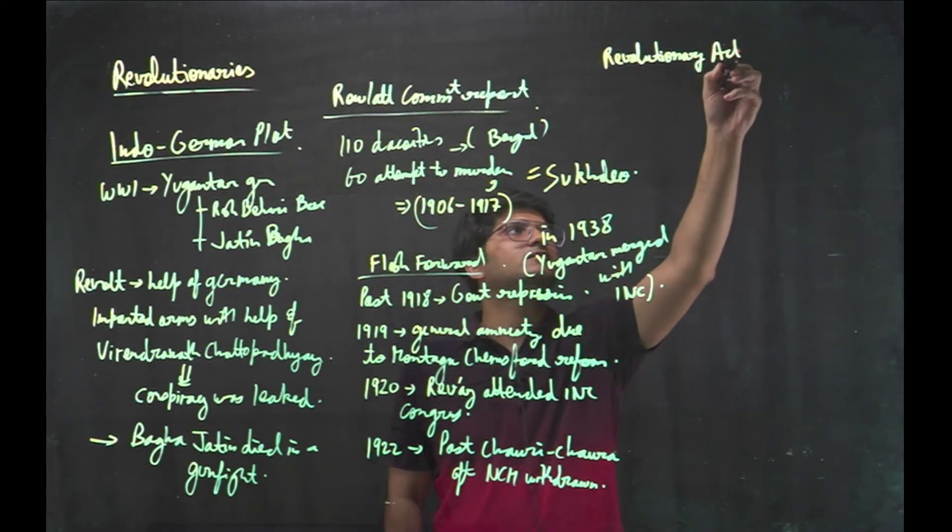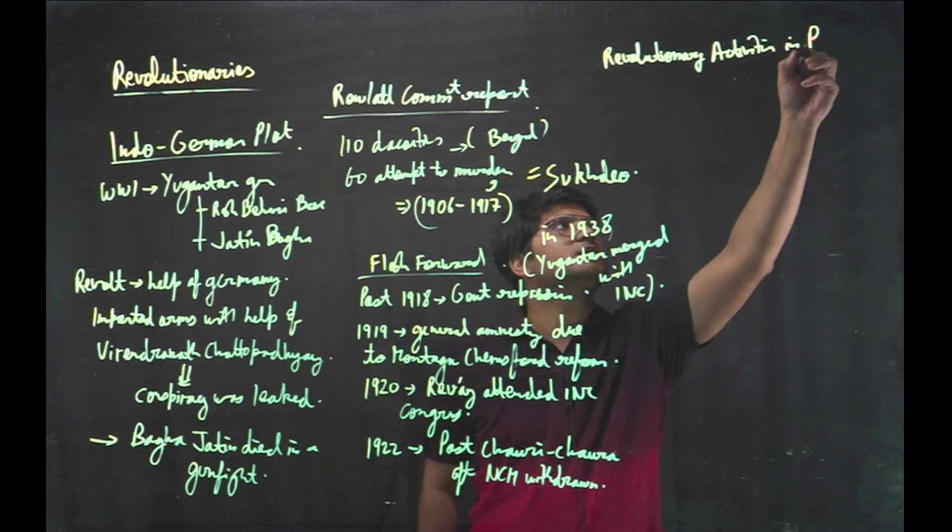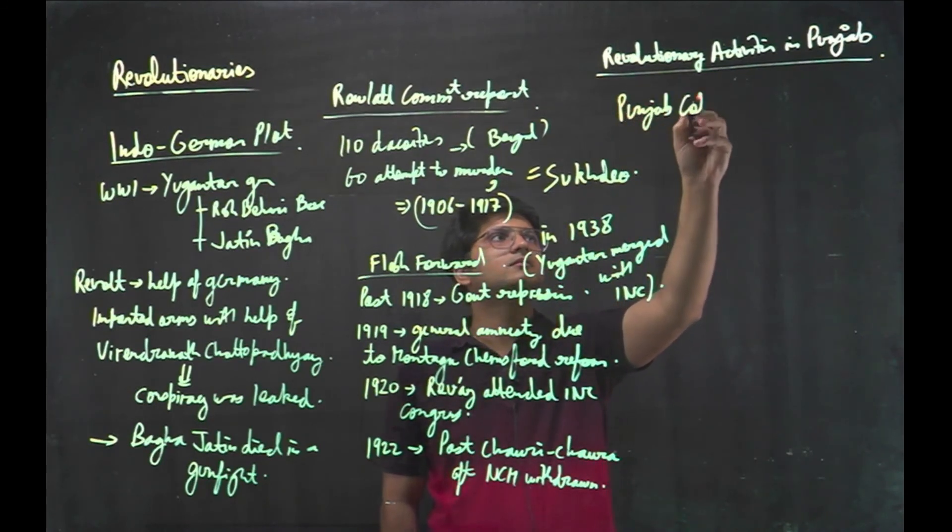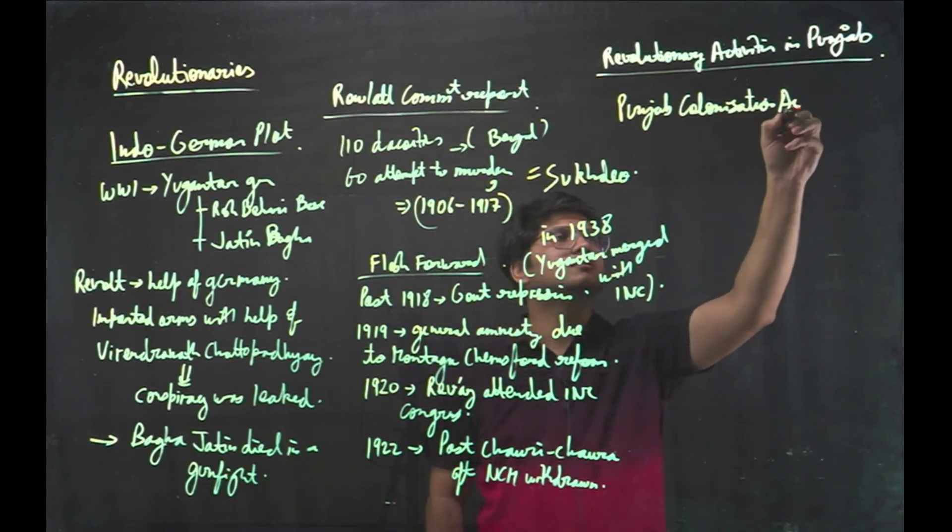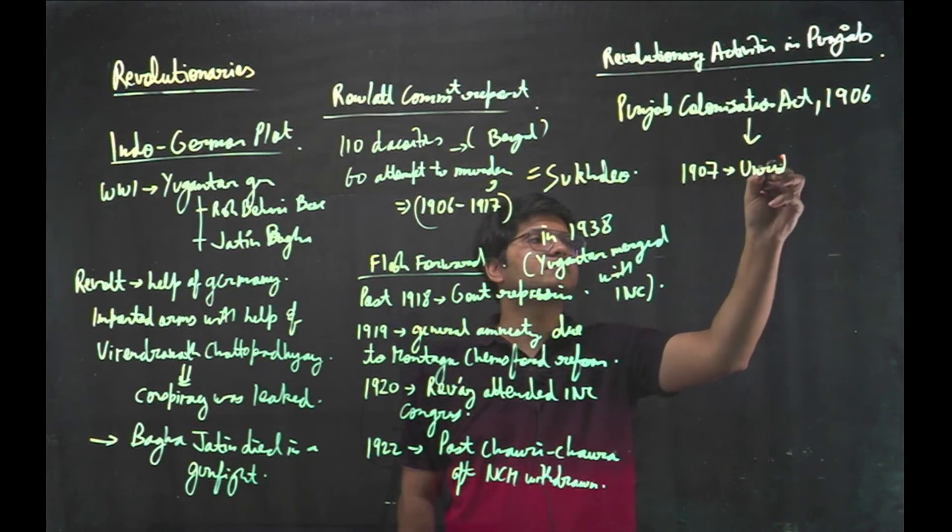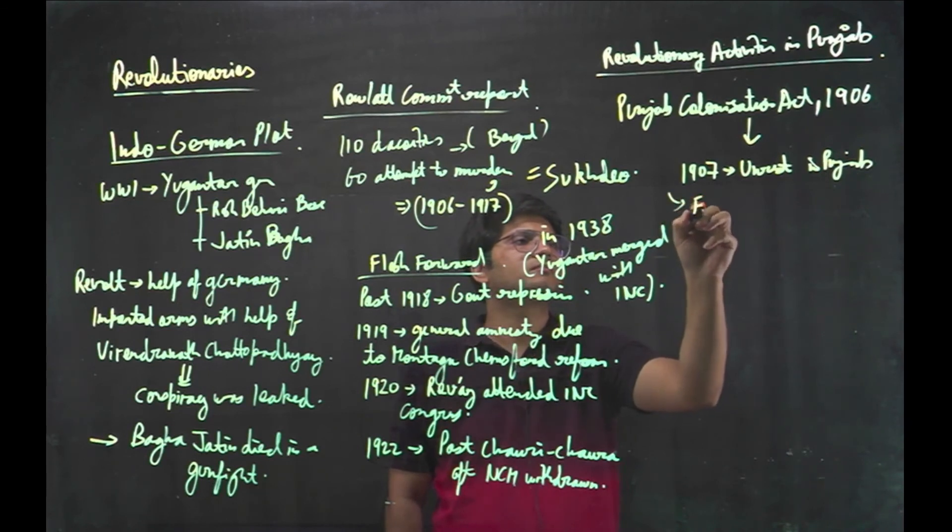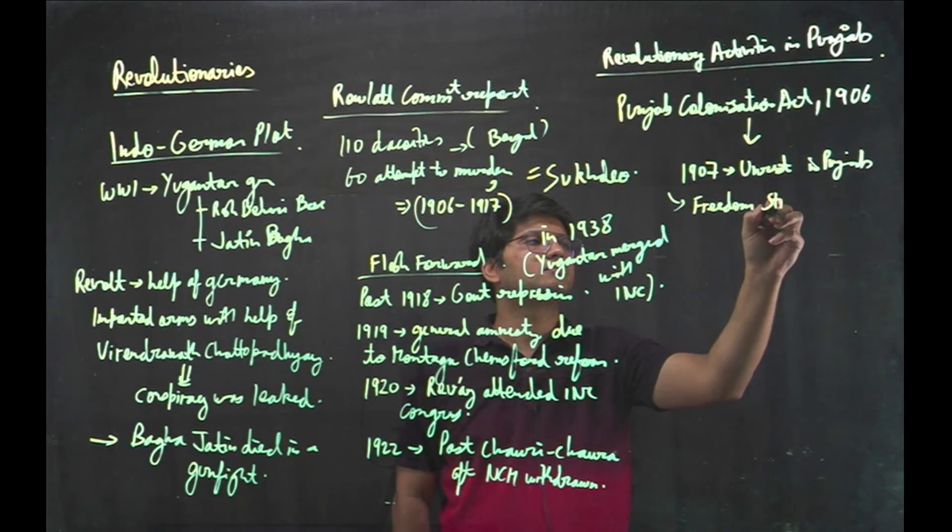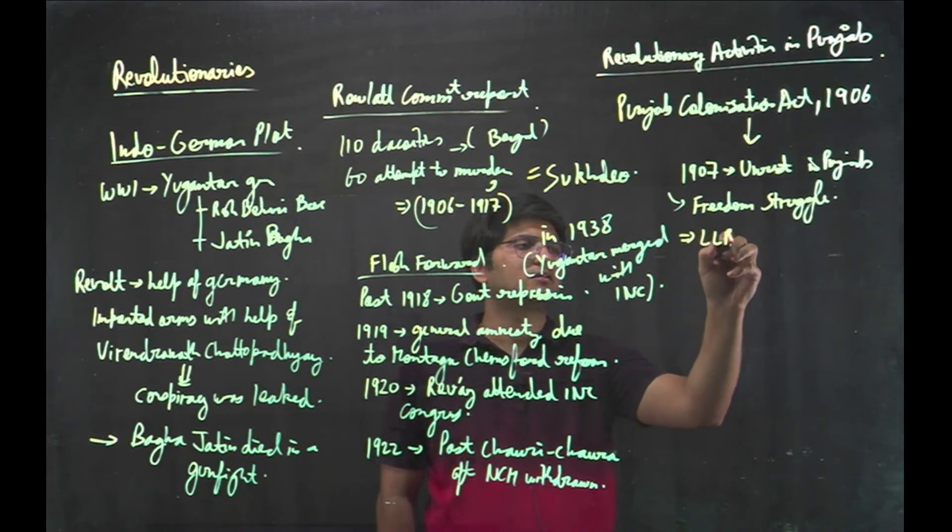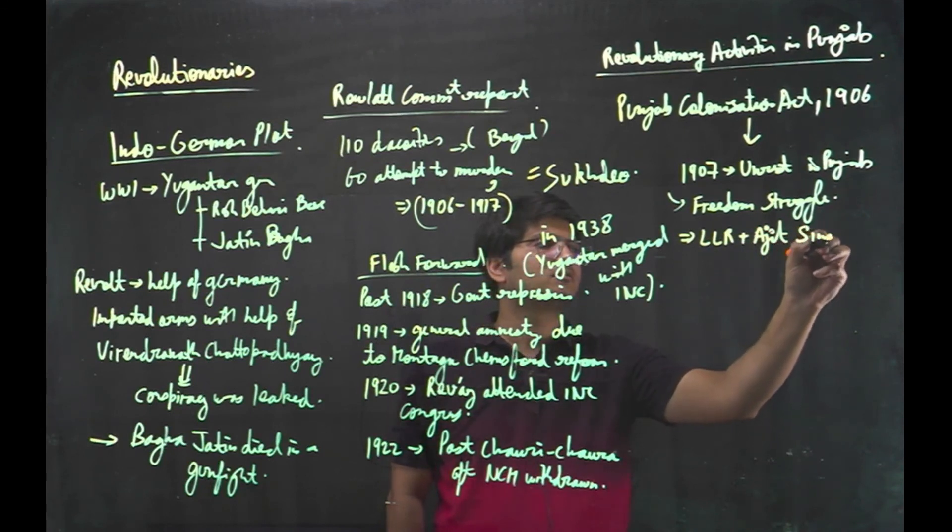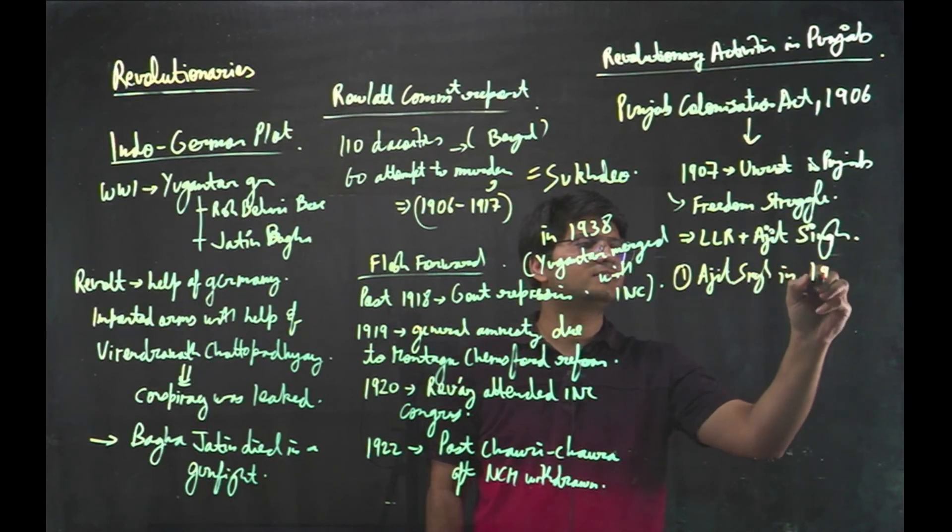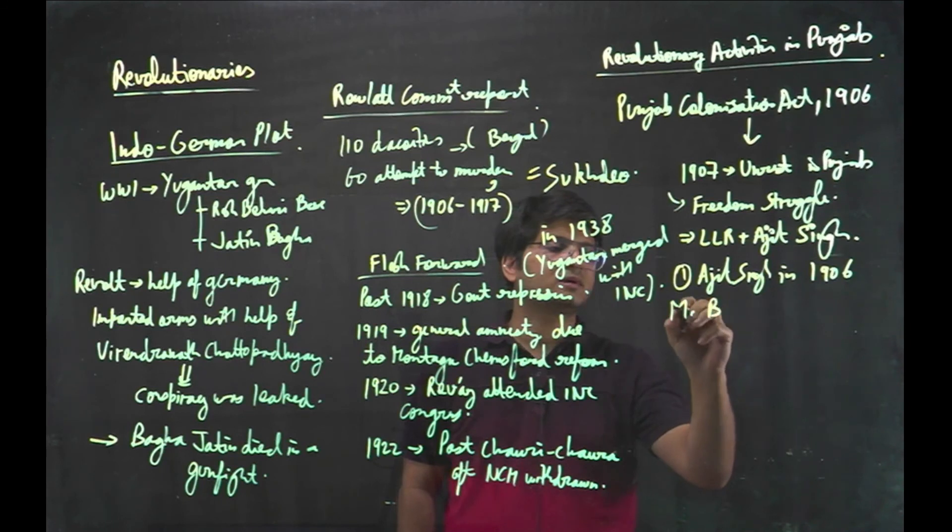Now revolutionary activities in Punjab. Punjab Colonization Act 1906 was passed. In response to that in 1907 there was unrest in Punjab. It was freedom struggle of Punjab. Main leaders of this movements were Lala Lajpat Rai and Ajit Singh. Ajit Singh in 1906 organized Bharat Mata Society.